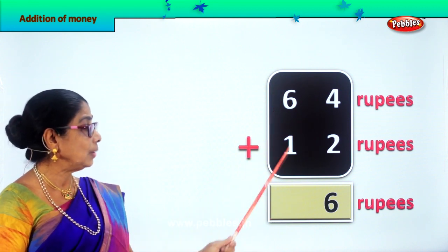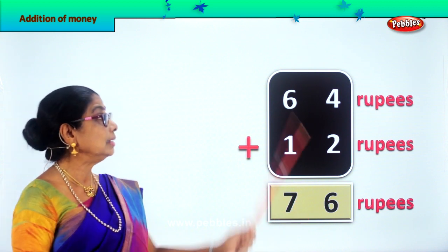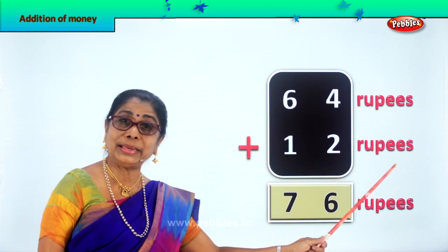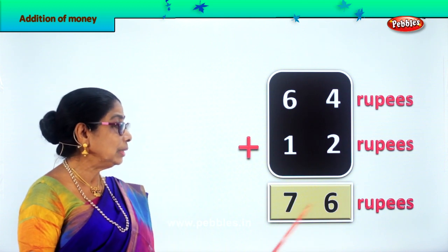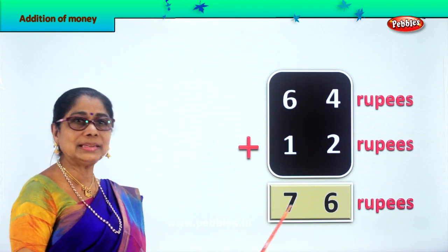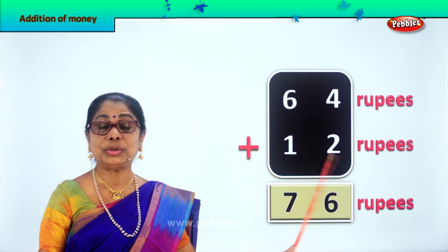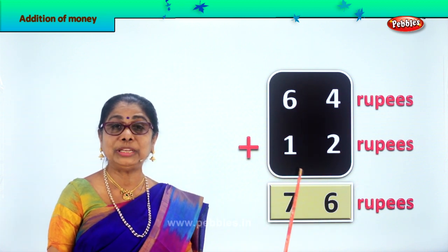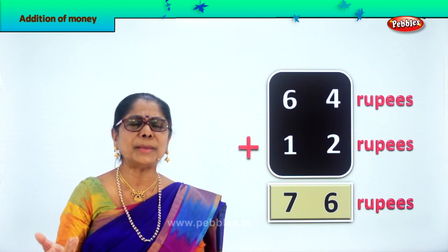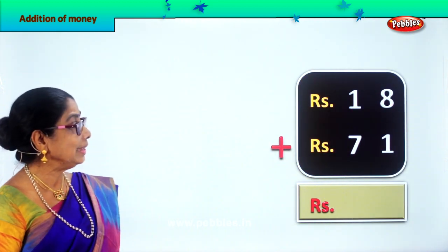4 rupees plus 2 rupees gives you 6. So we write 6 in the ones place. Then the tens place: 6 plus 1 is 7. So we write 7. 64 rupees plus 12 rupees is equal to 76 rupees. You can also add rupees, but you must know these are all rupees. 64 rupees plus 12 rupees makes 76 rupees. Did you enjoy the exercise? We will do some more addition of money.